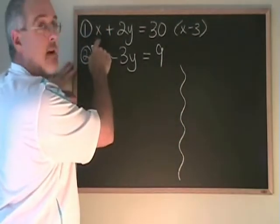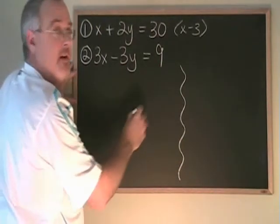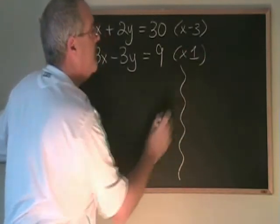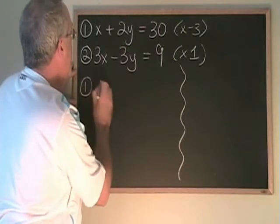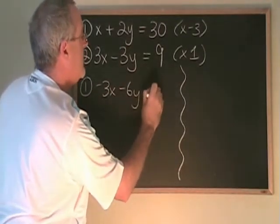That will result in negative 3x right here. That means I'll be multiplying the second equation by 1. If I multiply the top equation by negative 3, I get negative 3x minus 6y equals negative 90.